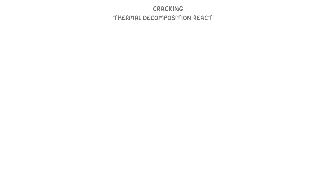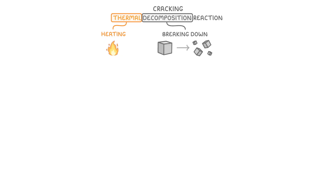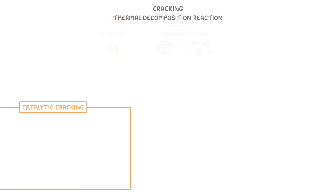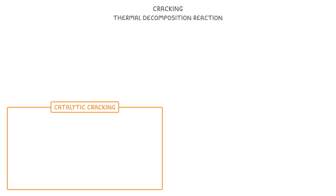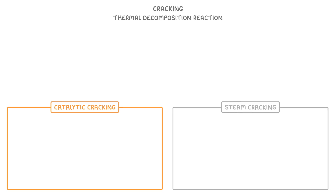Cracking is a thermal decomposition reaction. Thermal means heating, and decomposition means breaking down. So thermal decomposition means breaking down molecules by heating them. There are actually two different methods you need to know about: one is catalytic cracking, and the other is steam cracking.